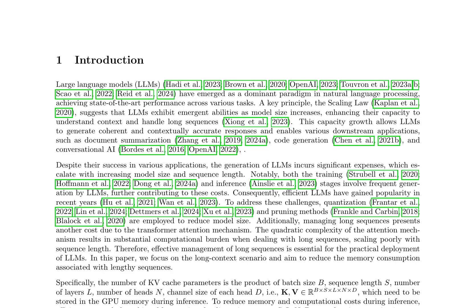Efficient channel pruning for large language models. Large language models (LLMs) have emerged as a dominant paradigm in natural language processing, achieving state-of-the-art performance across various tasks. A key principle, the scaling law, suggests that LLMs exhibit emergent abilities as model size increases, enhancing their capacity to understand context and handle long sequences. This capacity growth enables various downstream applications, such as document summarization, code generation, and conversational AI.